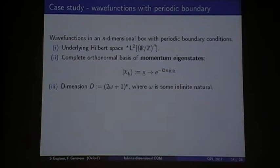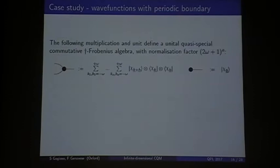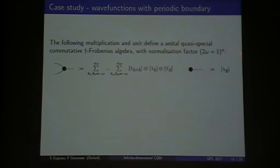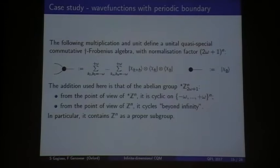Now, we can put all this to good use and start actually doing some physics with it. So, for instance, you can take the underlying Hilbert space of the non-standard L2 of R over Z to ω. You define momentum eigenstates, like you usually do. The dimension of this is this guy, when omega is now some infinite natural, because you are working in R. And you have classical structure, like this. And, basically, you can define, with this, a quasi-special commutative dagger Frobenius algebra, with this normalization factor. Again, this guy is infinite, but you don't really care, because we are treating it as a non-standard natural.